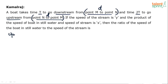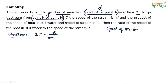Let us understand the upstream case. The time taken upstream is 2t, which equals distance divided by speed — that is, d divided by (speed of the boat minus speed of the stream). Let us assume the speed of the boat in still water is b, and the speed of the stream is y.